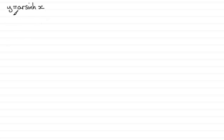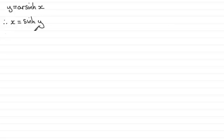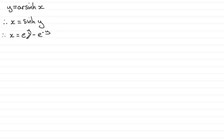To start with, if we rearrange this, we've therefore got that x would be equal to the sinh of y. Taking the definition of sinh of any value, we've got that x equals e to the power y minus e to the power minus y, all divided by 2.